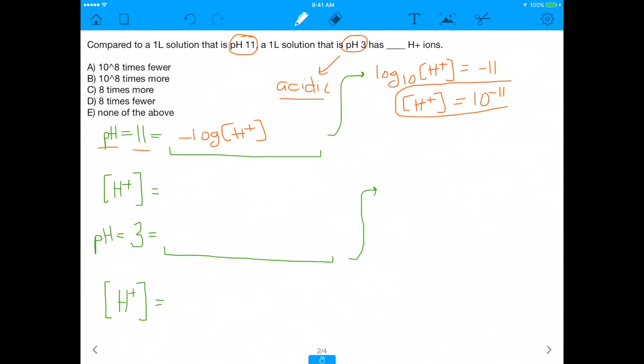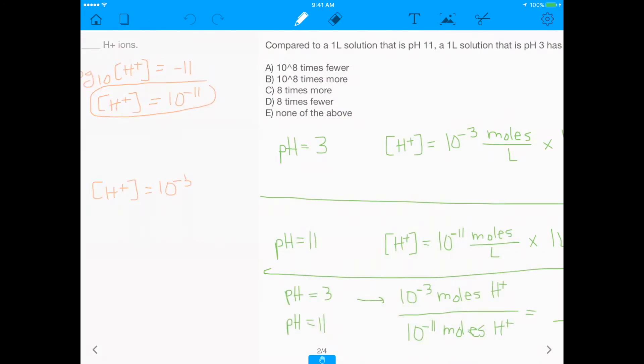So knowing how to do logs is necessary for the MCAT. Similarly, if you do all the math for pH of 3, if you do the same math, you'll see that the H+ here is equal to 10 to the negative 3rd, because it's the very similar math as above. So now we figured out the H+ for the top, which is if a pH of 11, you have an H+ of 10 to the negative 11. And pH of 3, you'll have an H+ concentration of 10 to the negative 3. And again, this is moles per liter.